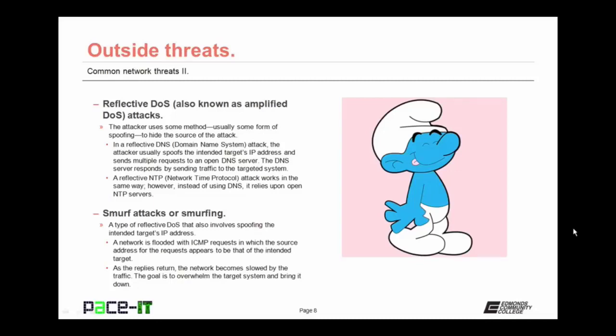A cousin to the reflective DNS attack is the reflective NTP attack, or the reflective network time protocol attack. It works in the same way, however instead of using DNS, it relies upon open NTP servers. Not very common anymore, but you still need to know about it, are the smurf attacks, also known as smurfing. It's a type of reflective denial of service attack that also involves spoofing the intended target's IP address. A network is flooded with ICMP requests in which the source address appears to be that of the intended target. As the replies return, the network becomes slowed down by the traffic. The goal is to overwhelm the target system and bring it down.